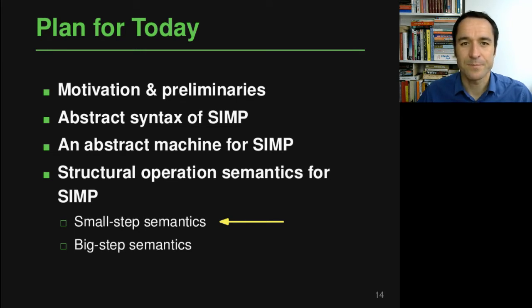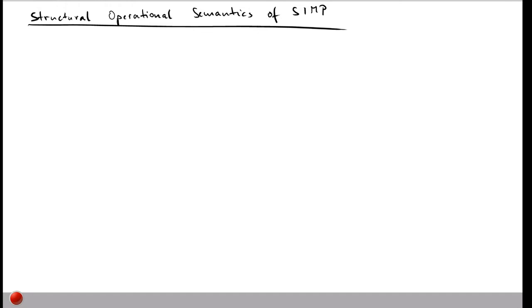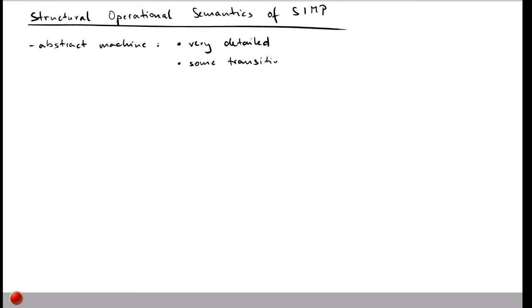If you've seen the previous video, you've already seen one way of defining the semantics of our language: the abstract machine, basically a hypothetical computer built to execute SIMP programs. This is a valid approach, but as you've seen, the abstract machine was pretty detailed — many of the rules were not about actual computation but about manipulating the syntax of the language, such as decomposing a command into its components.